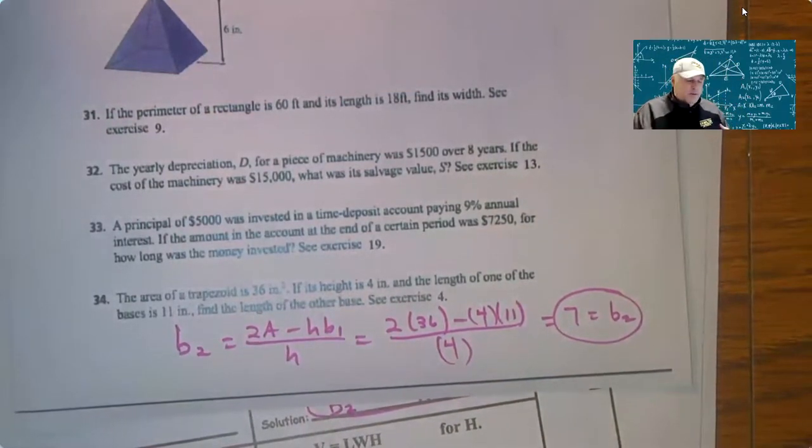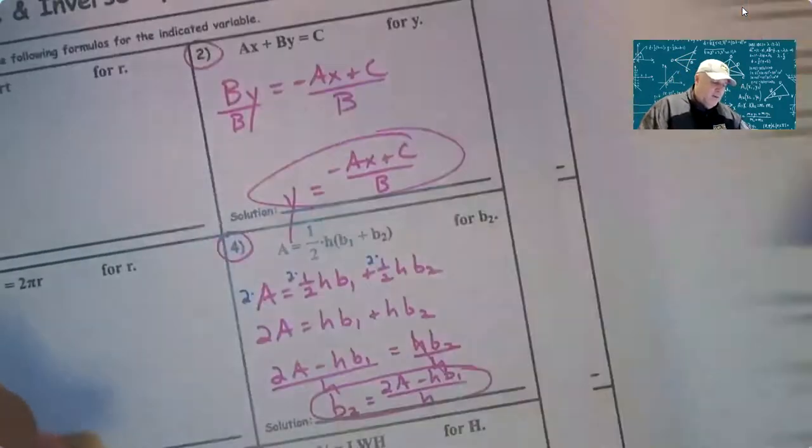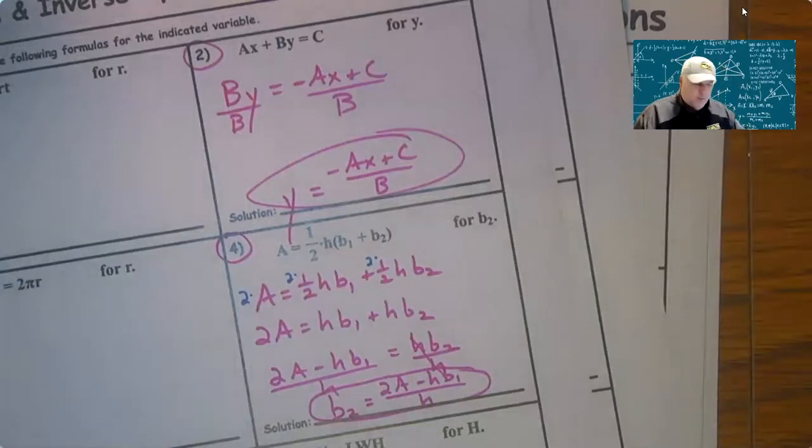Once you solve these, you just check and see: am I going to use it on the back? If not, you're golden, you move on to the next one. Problem five, solve for M.